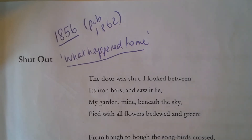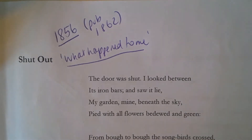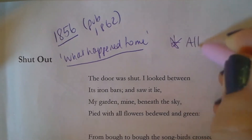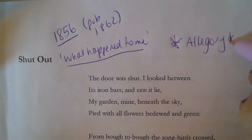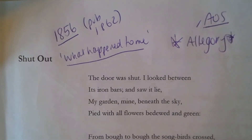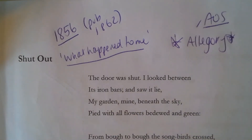So, 'Shut Out' was written in 1856 and published in 1862. Its original title was 'What Happened to Me,' and again we often get a lot of speculation about Rossetti's personal life and how this is related, but the key point is that this poem is seen as an allegory. What it is an allegory of is entirely your interpretation — this is good for AO5 because there are lots of different ways of seeing this poem. I'll point out the main ideas and then make comparisons as I go through.